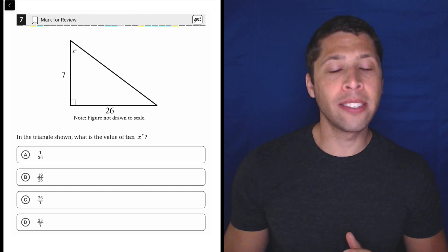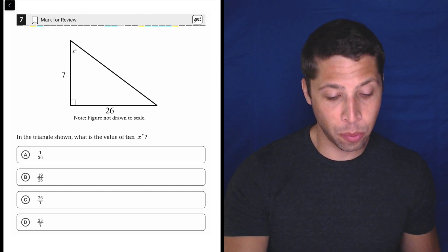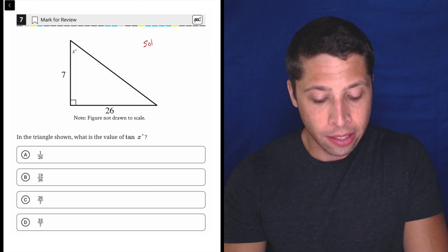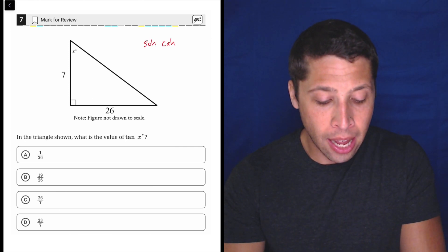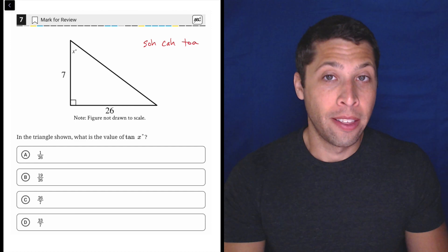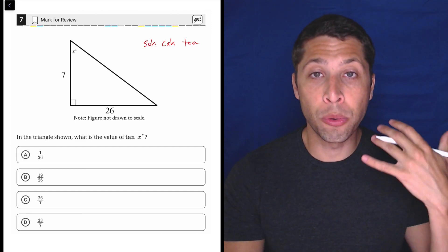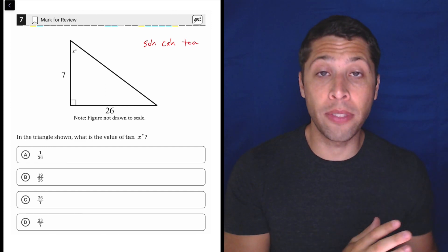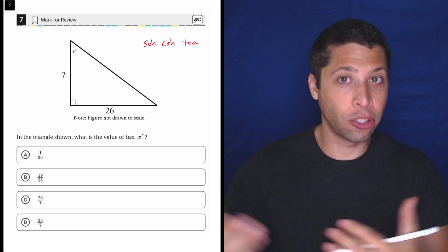Trigonometry on the SAT is pretty simple. There's really just one thing we need to know, and that is SOHCAHTOA. This is just a mnemonic device that's used to learn what each of the trig functions means.